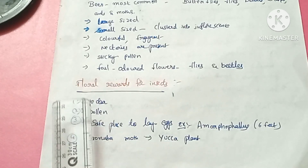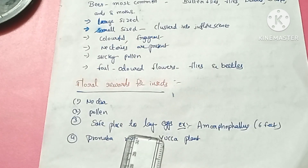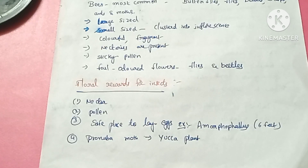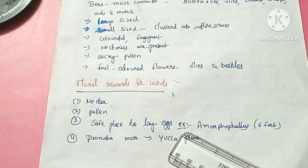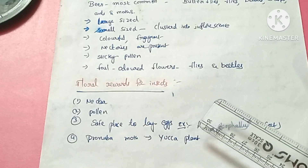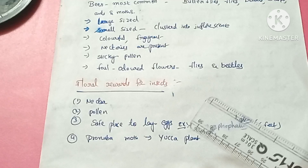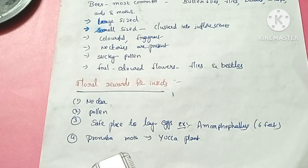Plants can provide flowers as a safe place, offering food, nectar, pollen, etc. For example, the Amorphophallus flower that is 6 feet in height gets pollinated by insects. Another example is the yucca plant and the pronuba moth — this yucca plant is pollinated by the pronuba moth, and this pronuba moth lays its eggs in the ovary of the yucca plant. Both the pronuba moth and the yucca plant cannot complete their life cycle without each other. The moth deposits its eggs in the locules of the ovary.